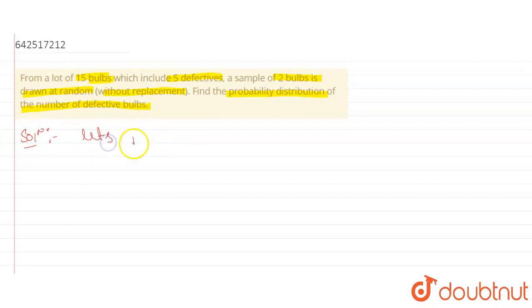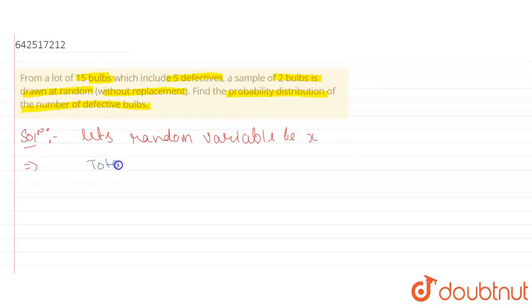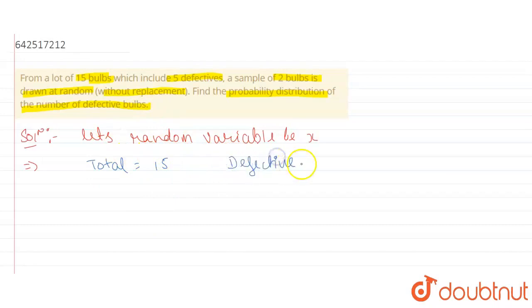This problem is about the number of defective bulbs. Let's start with the solution. First of all, let's define a random variable — let the variable be X. In this question, we are given that there are total 15 bulbs and 5 are defective bulbs from these 15 bulbs. So, defective bulbs are 5 and normal bulbs are 10.